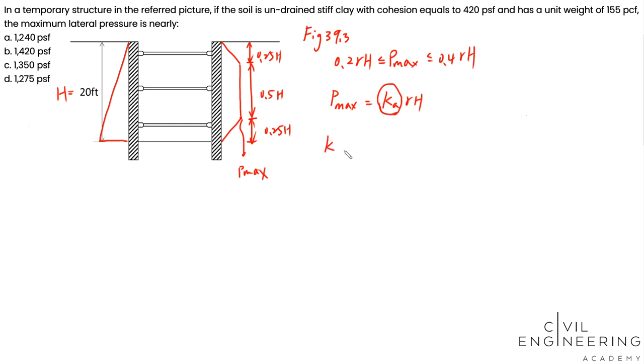Okay, so Ka is 1 minus 4c divided by gamma h. So 1 minus 4c, c is your cohesion, 420. Gamma is 155, h is 20. So this is 0.46.